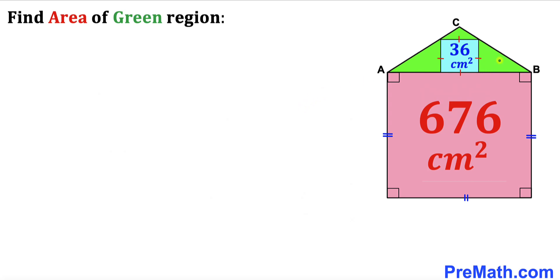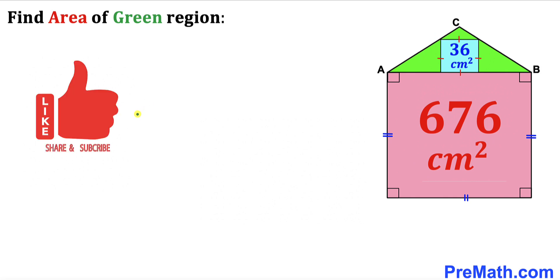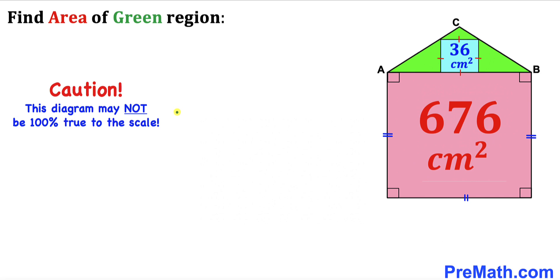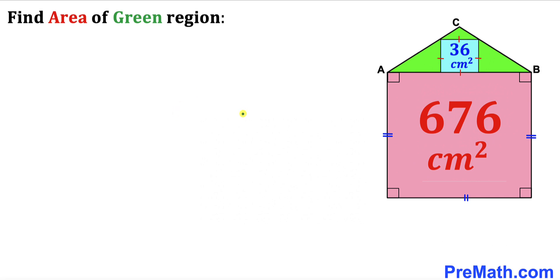Welcome to PreMath. In this video we have a blue square fully inscribed in a green triangle ABC, as you can see in this diagram. This green triangle ABC is at the top of a pink square. The area of the blue square is 36 cm² and the area of the pink square is 676 cm². Our task is to calculate the area of the green shaded region. Please keep in mind that this figure may not be 100% true to scale.